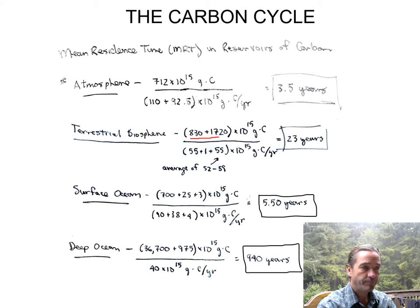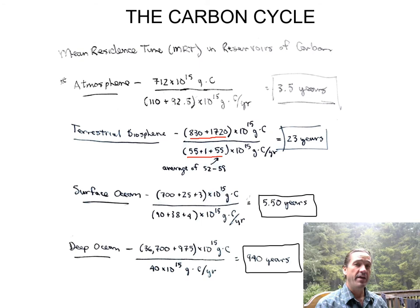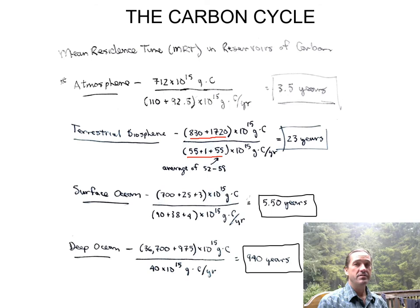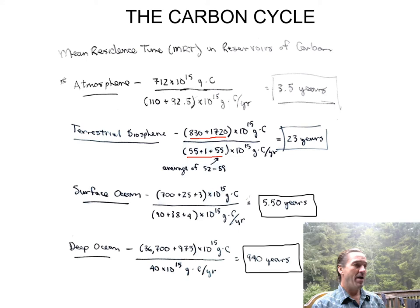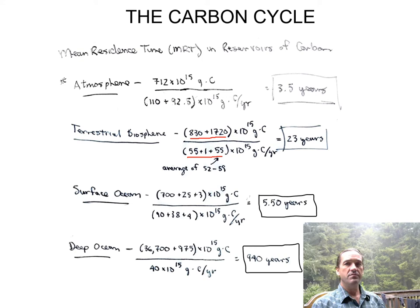For the biosphere, taking all the inventories and dividing by the fluxes out, I got 23 years. Does that number seem reasonable? Well, if we're talking about the biosphere — mostly living things or organic matter slowly decomposing — I think 20 years is a pretty reasonable estimate. Some things live only for weeks, but other things like redwood trees live thousands of years, so on average we're talking about a 20-year residence time.